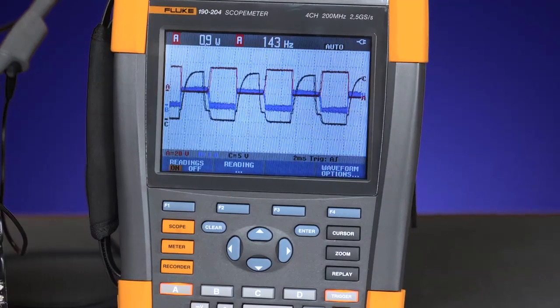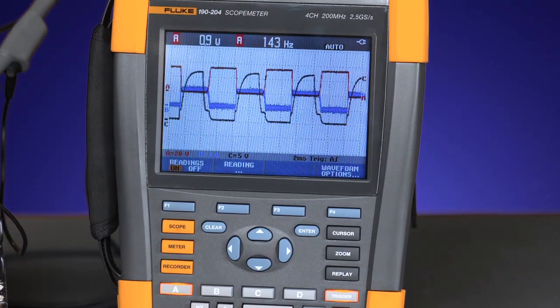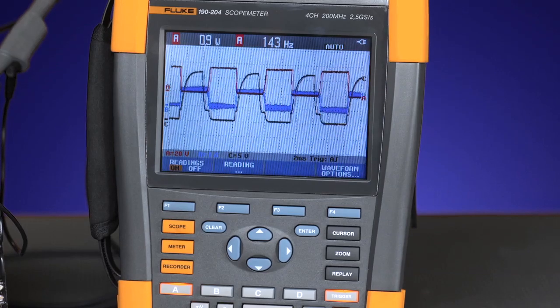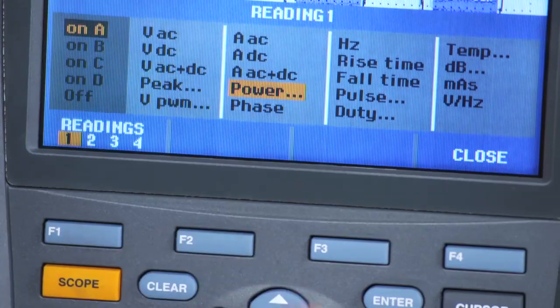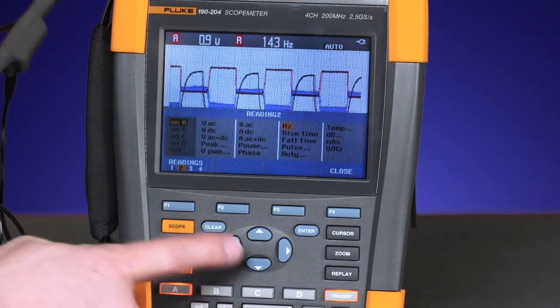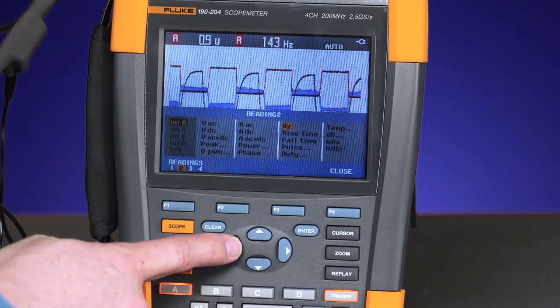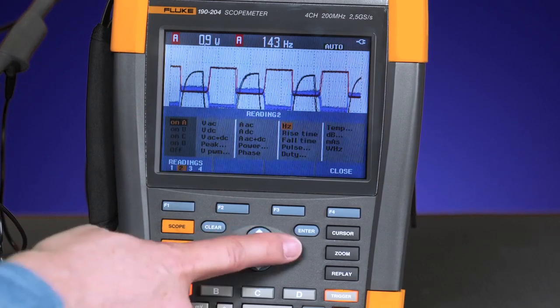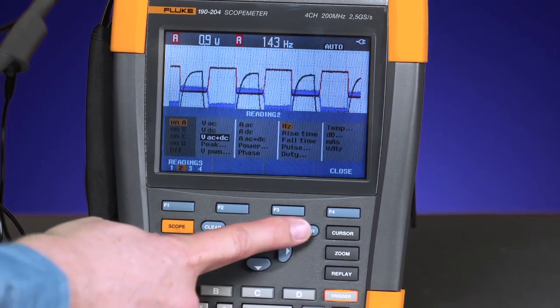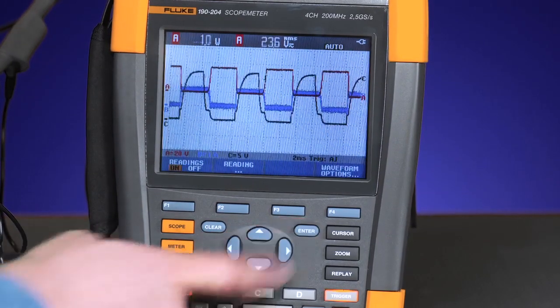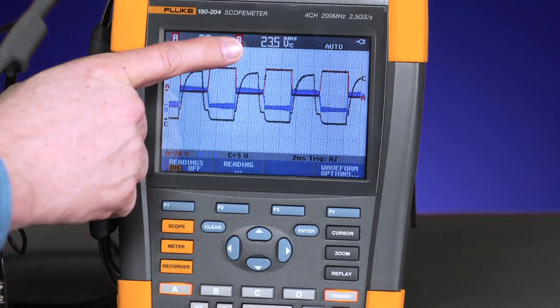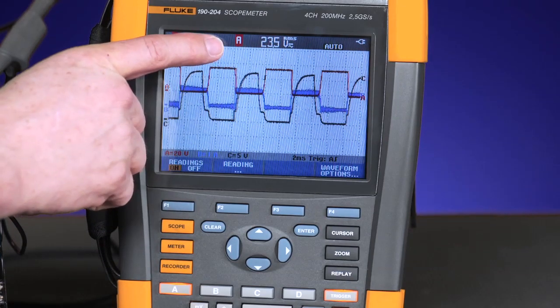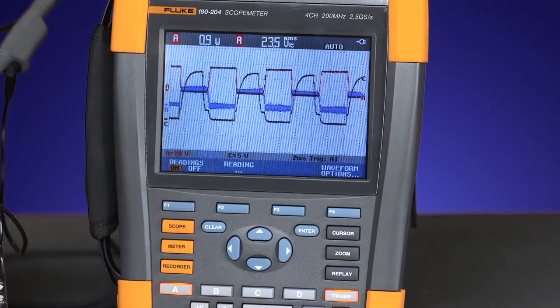The next measurement we'll set up measures the voltage on input A. To begin, select reading two, measuring on input A. Next we'll measure the voltage AC plus DC across input A. You can see the second measurement on input A, in this case 23.5 volts RMS.